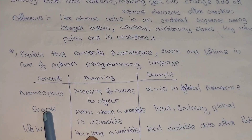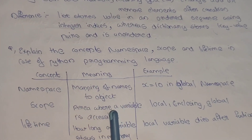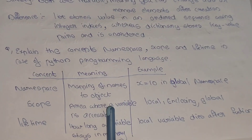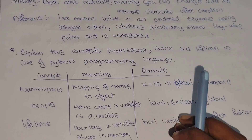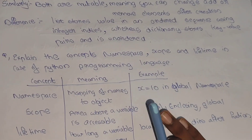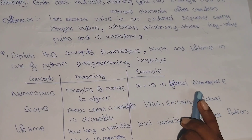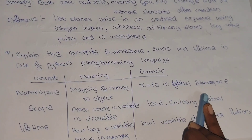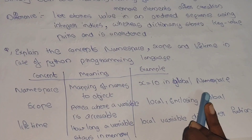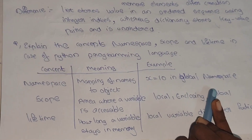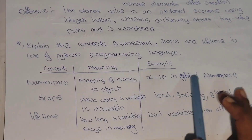Scope is the area where a variable is accessible. There are accessible variables in different areas — for example, local variables and global variables.